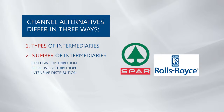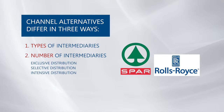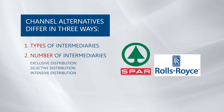Talking about channel alternatives, we have to consider not only the type of intermediaries but also the number of intermediaries — that is, what number of channel members to use at each level. There are three strategies available. We have intensive distribution, where stock is available in many outlets, typical for convenience products — a company like 7-Eleven. We also have exclusive distribution, where you limit the number of intermediaries handling your product, typical in luxury products like Hermès, Rolex, or Rolls-Royce.